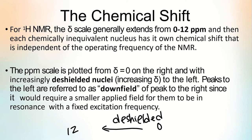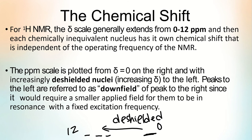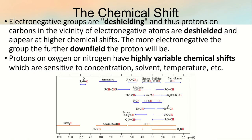Peaks to the left are referred to as downfield of peaks to the right, since it requires a smaller applied field for them to be in resonance with a fixed excitation frequency. Peaks in the right region are upfield. Electronegative groups are deshielding, and thus protons and carbons in the vicinity of electronegative atoms appear at higher chemical shifts. The more electronegative the group, the further downfield the proton will be.